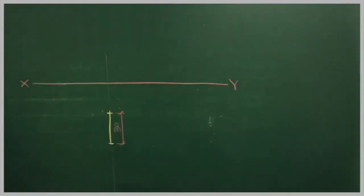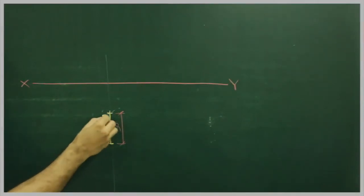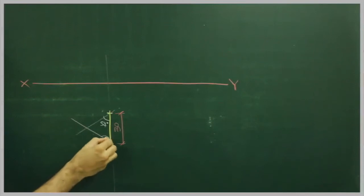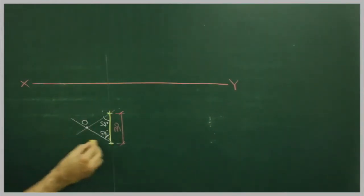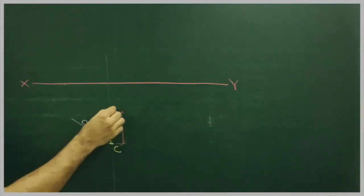After that you take 54 degrees. You take 54 degrees from here as well as you take 54 degrees from here. Where they meet, that is point O. This point is C and D.